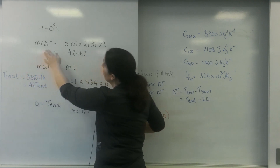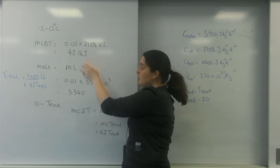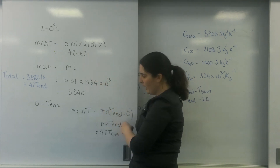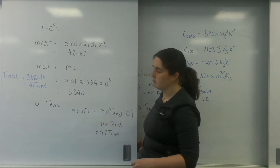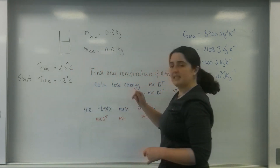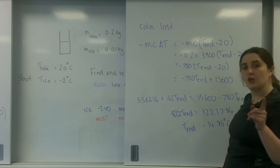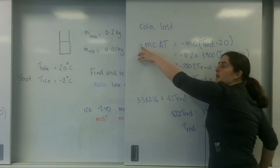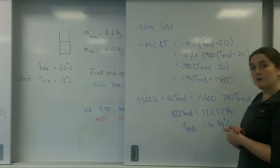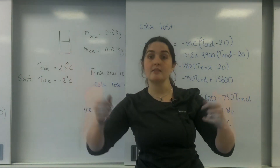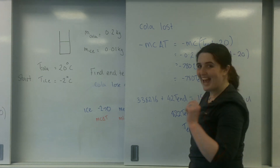I wrote what happened and filled in the information I could. The ice gained energy to reach the final temperature — I could calculate the stages I had numbers for, and left the last bit in terms of T-end. Then I wrote the equation for the ice, did the exact same for the cola with a minus sign, and set them equal to solve for the end temperature.